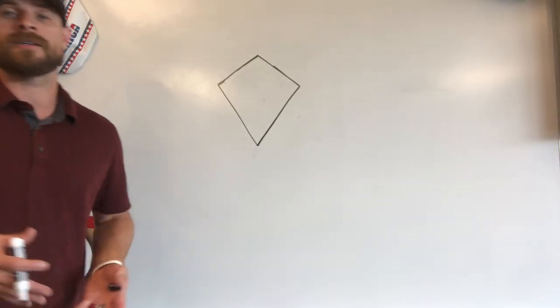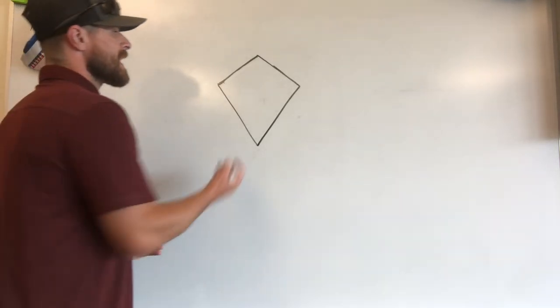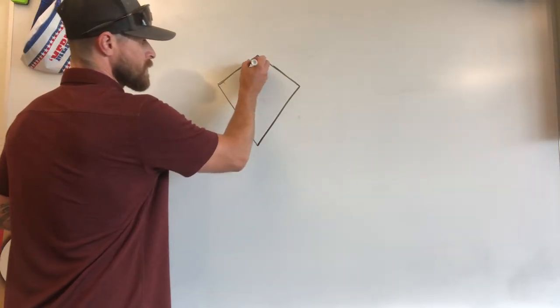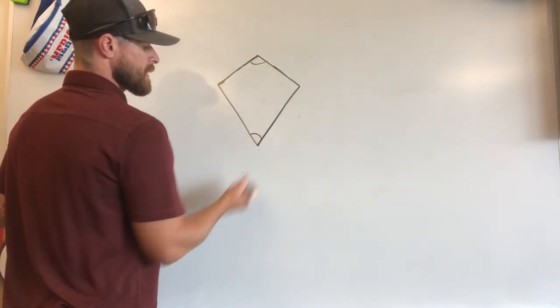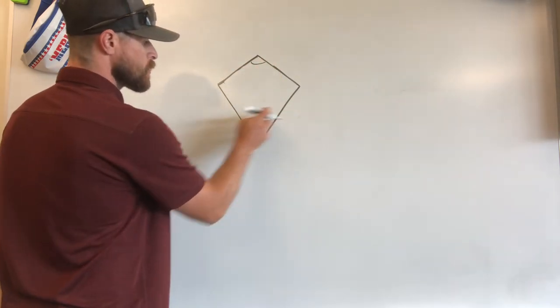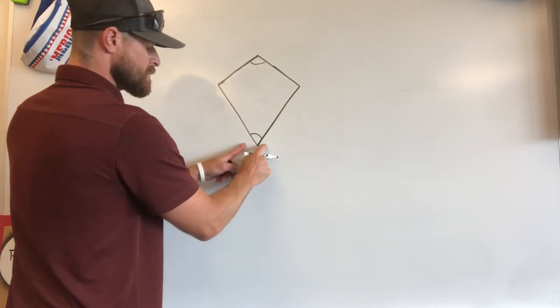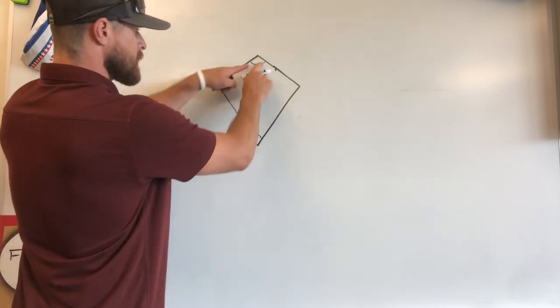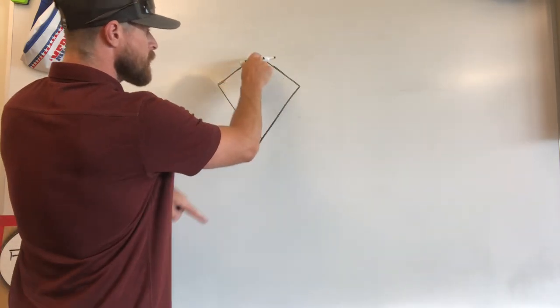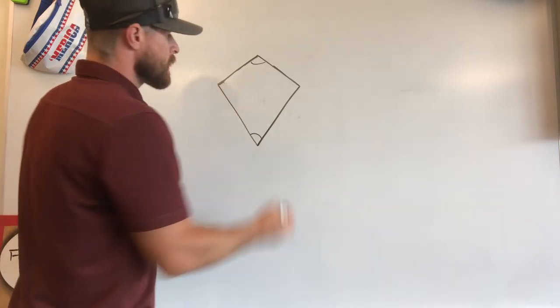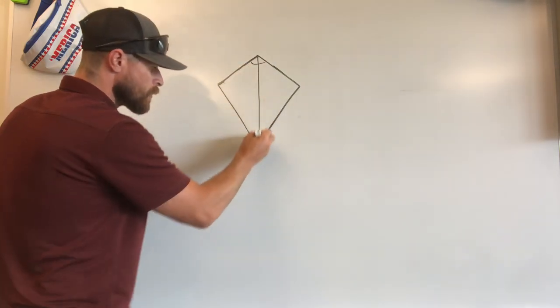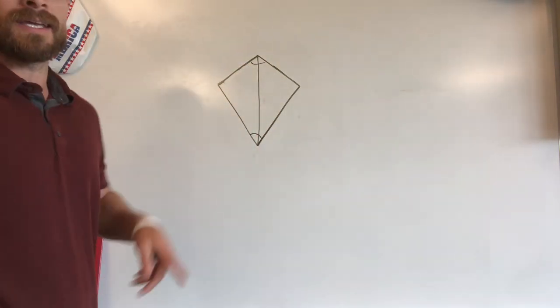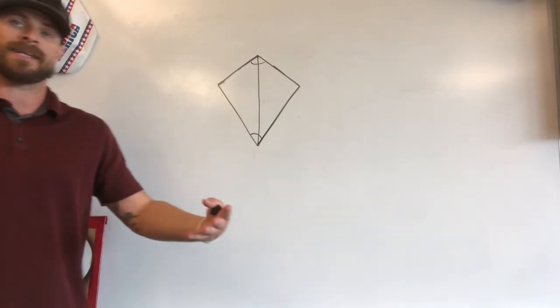Another important characteristic of a kite is if we were to draw a diagonal through our vertex angles. We've got a vertex angle here and a vertex angle here. Remember that comes from two congruent sides. These two sides being the same create this vertex angle. These two sides being the same create this vertex angle. And if I draw a diagonal through those two vertex angles, it acts as an angle bisector for each one.